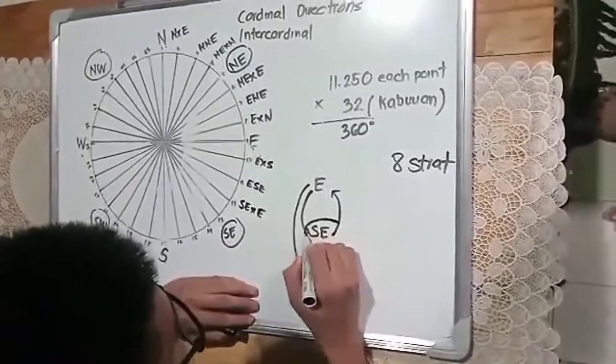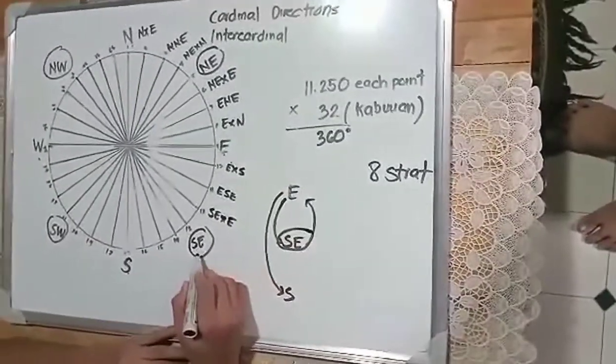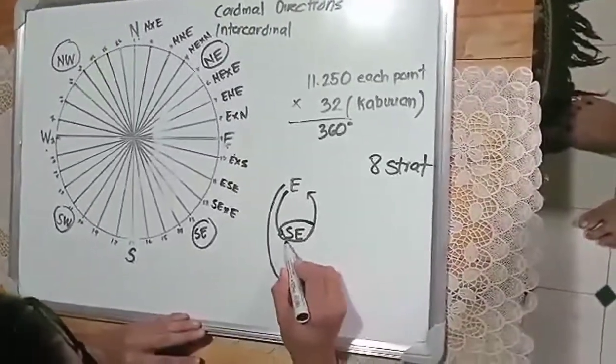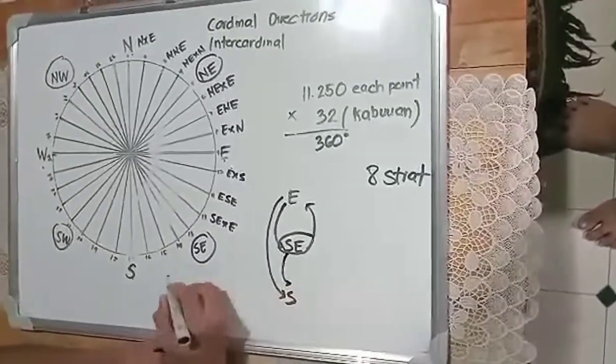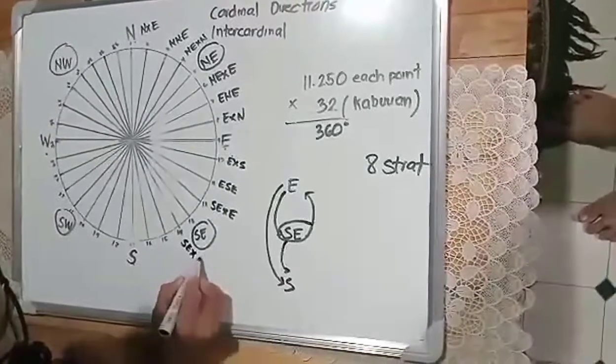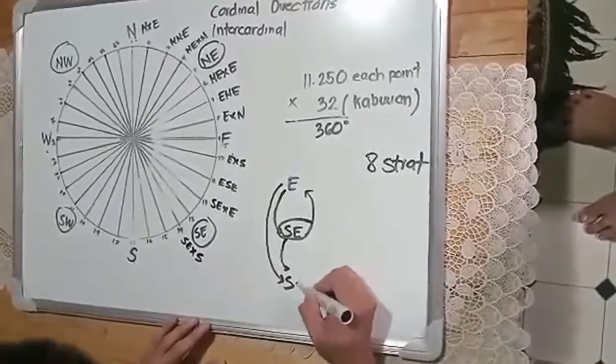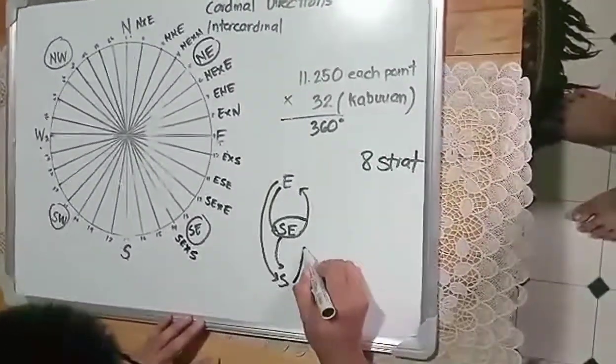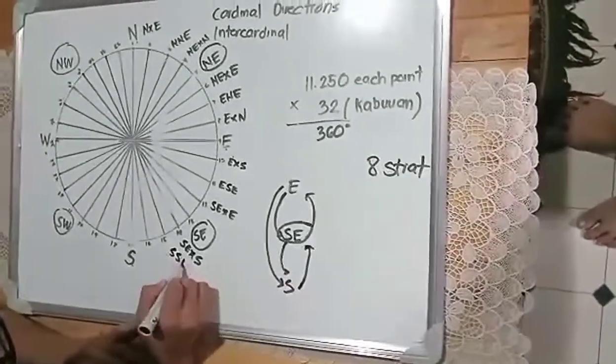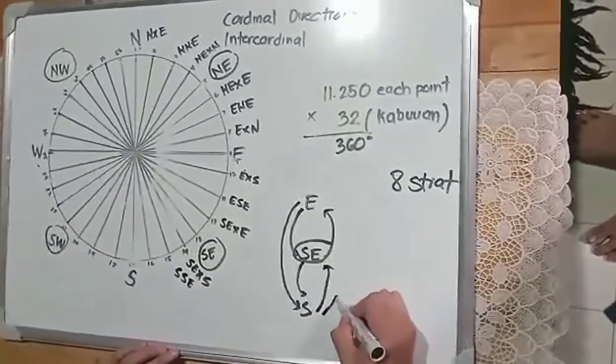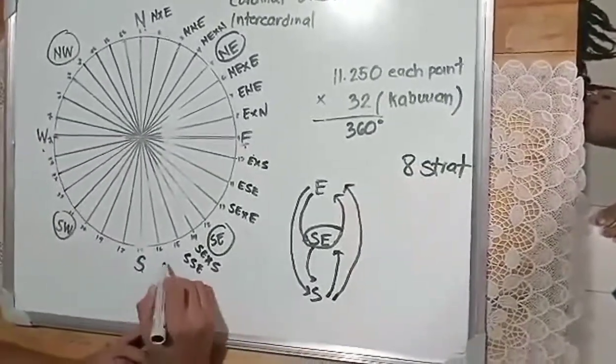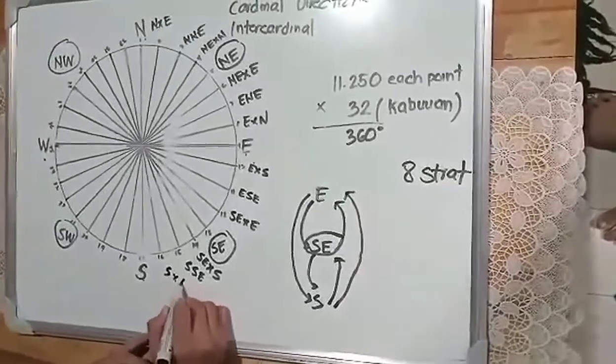Same pattern. From southeast going down: southeast by south. Next going up: south southeast. And from south going up: south by east. That's the figure 8 strategy. We're done with the second quadrant.